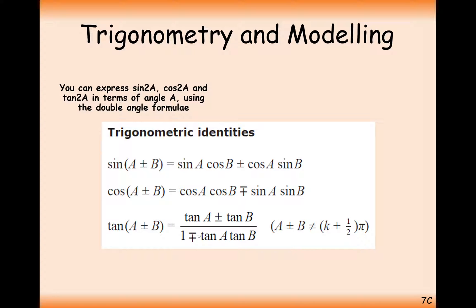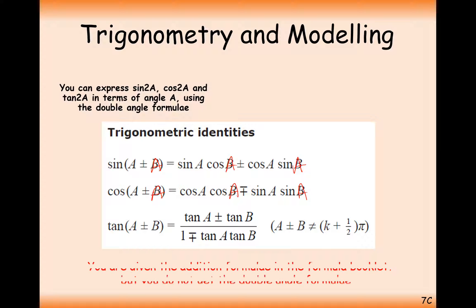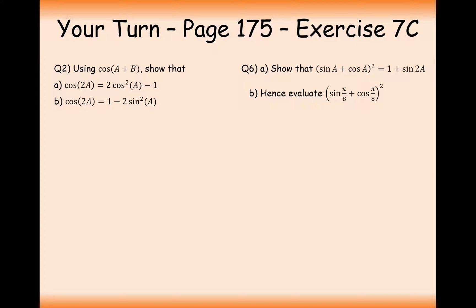Before the practice questions, I just want to identify that you do get the addition formulas in the formula booklet, but you do not get the double angle rules. What you can do is just replace both b values with a in the sine addition formula, and you've effectively got your sin 2a formula. Same with the cos one — replace with a, and you've got your cos 2a formula.